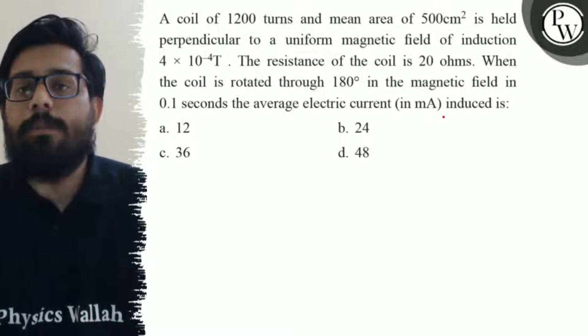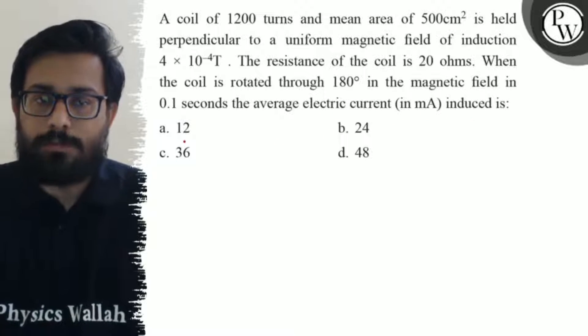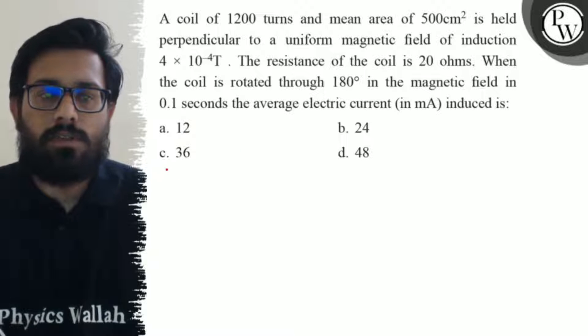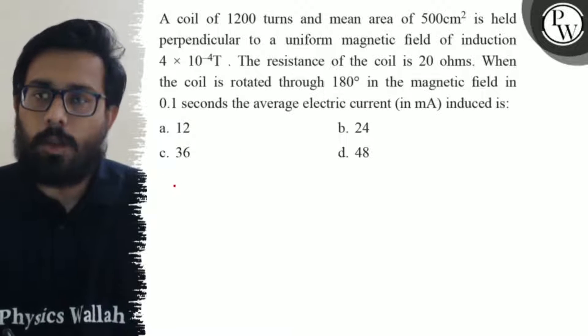When the coil is rotated through 180 degrees in the magnetic field in 0.1 seconds, the average electric current in milliampere induced is: first option 12, second option 24, third option 36, and fourth option 48.